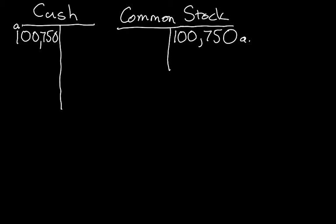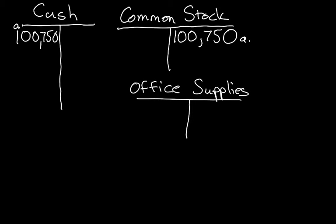The second transaction: the company purchased office supplies for $1,250 cash. So we have cash again and another account for office supplies. The company paid out $1,250 cash for those office supplies. Cash is an asset and cash decreased, so in order to decrease an asset we credit cash $1,250. Office supplies is also an asset but it increased, so in order to increase an asset we debit office supplies $1,250.